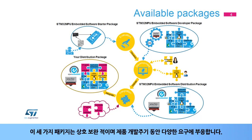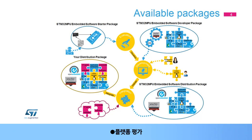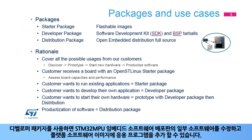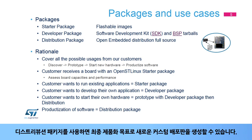These three packages are complementary and answer different needs throughout a product development cycle: platform evaluation, application or kernel development, and integration and product delivery. The Starter Package allows a quick and easy means to get any STM32 microprocessor development platform up and running. The Developer Package allows the modification of some pieces of software of the STM32MPU Embedded Software Distribution, as well as the addition of applications in the platform software image. The Distribution Package allows the creation of a new distribution with a final objective of productization.